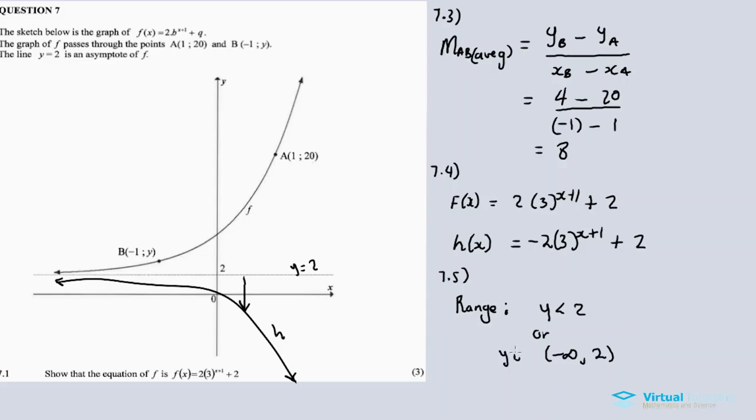Y less than 2, or y element of negative infinity to 2. We exclude the negative infinity as well as the 2, since it's an asymptote. 7.5 is the last question, that's question 7, which concludes our question 7.